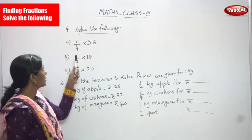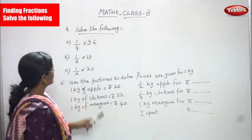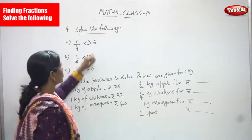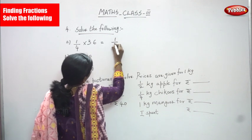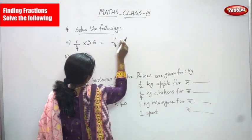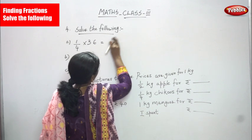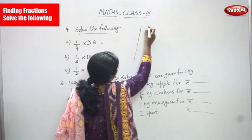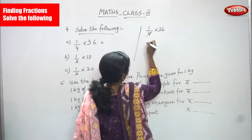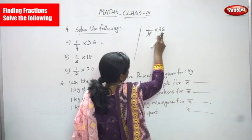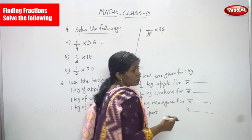Now we are going to solve 1/4 × 36. To solve this, you must use the fourth table. 36 is going to be divided and cancelled by 4.